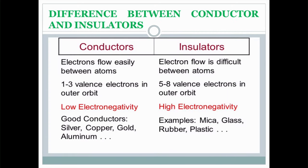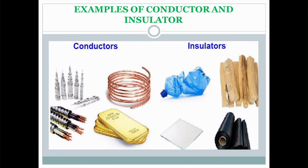Now let's look at the difference between conductor and insulator. In a conductor, electrons flow easily between atoms, whereas in an insulator, electron flow is difficult between atoms. The valence electrons in the outermost orbit for a conductor is 1 to 3, whereas in an insulator it is between 5 to 8. Conductors have low electronegativity whereas insulators have high electronegativity. Examples of conductors are silver, copper, gold, and aluminum. Examples of insulators are mica, glass, rubber, and plastic. In this diagram, the left-hand side shows examples of conductors and the right-hand side shows examples of insulators.